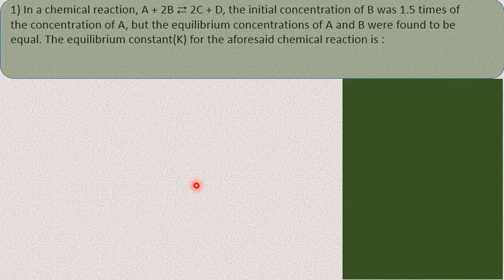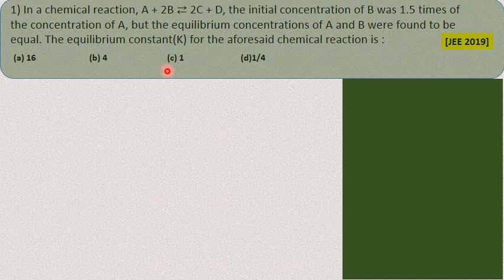Let us look at a very important question that is normally asked in examinations. In the chemical reaction A + 2B → 2C + D, the initial concentration of B was 1.5 times the concentration of A, but the equilibrium concentrations of A and B were found to be equal. The equilibrium constant Kc for this reaction is how much? The options are 16, 4, 1, and 1/4.